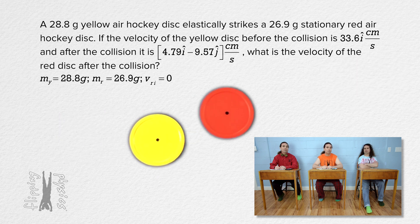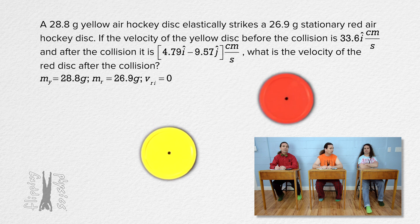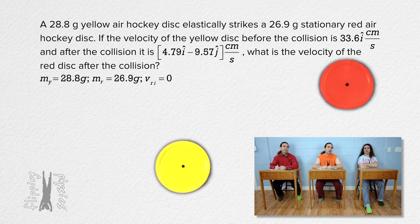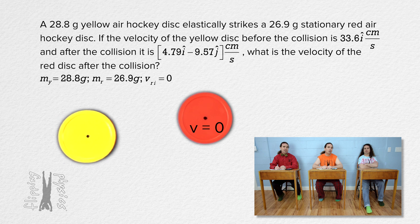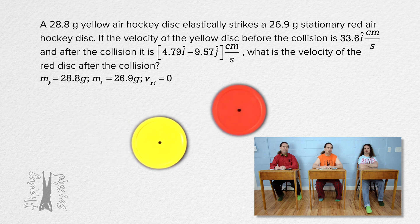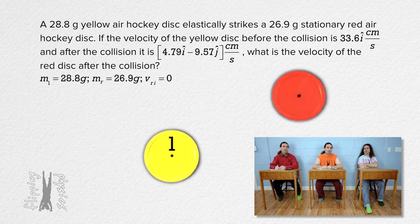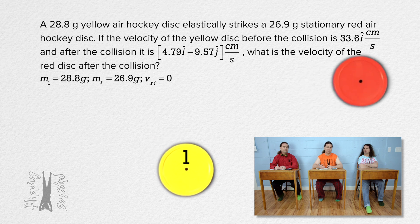I still think it'd be confusing if we use y for yellow and y for y direction. Maybe we should label them disc one and disc two. Sure, let's make the yellow disc number one and the red disc number two.